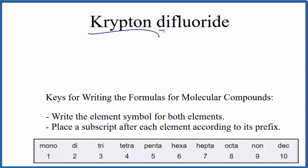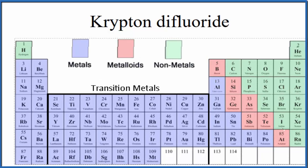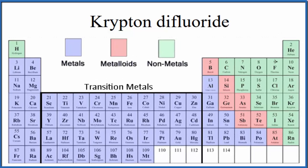To write the formula for krypton difluoride, we first need to know what type of compound we have here. So if we look at the periodic table organized by metals, nonmetals, and metalloids.